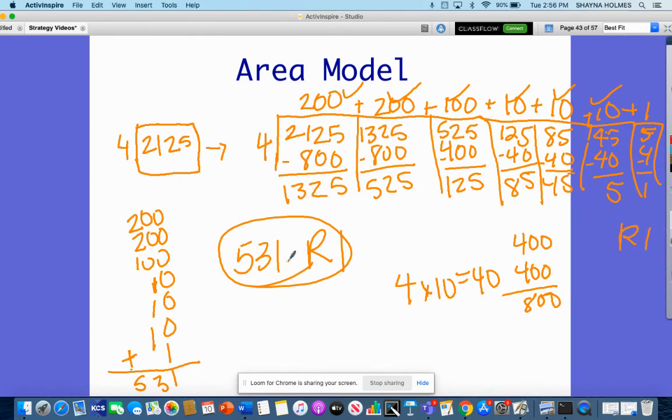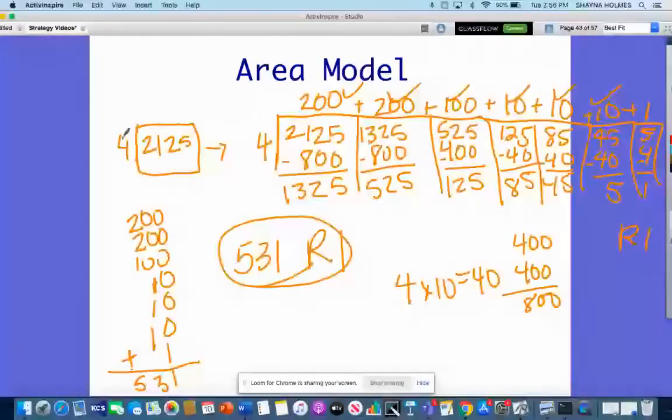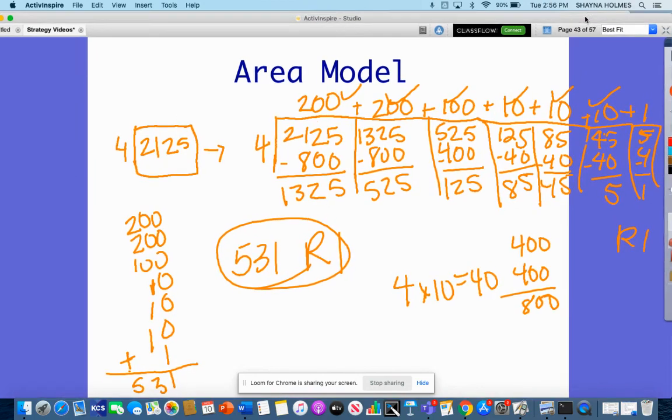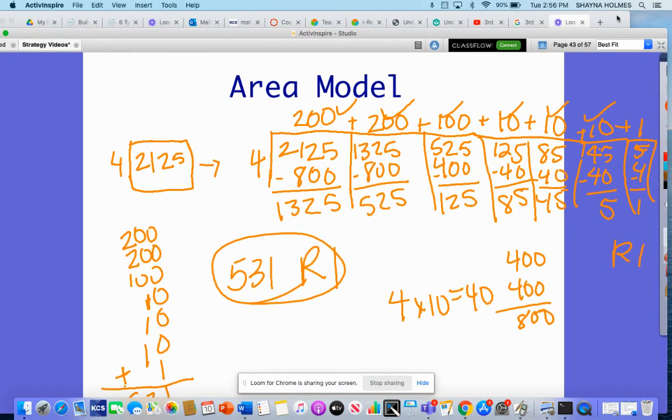And that is how you use the area model. Just remember that you need to start with the facts that you do know, so multiply your divisor by 1000, 100, and then 10. That is the end of today's math strategy video.